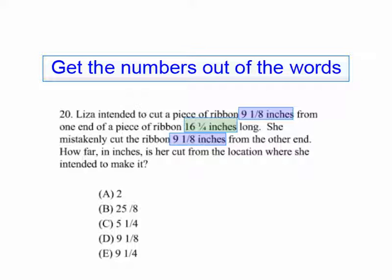We've got to find out how far 9 1/8 inches is from the other end of the ribbon. So we subtract 9 1/8 from 16 1/4, which gives us 7 1/8.